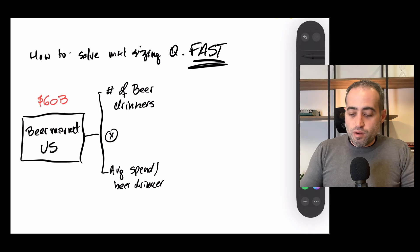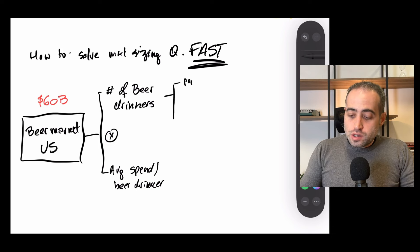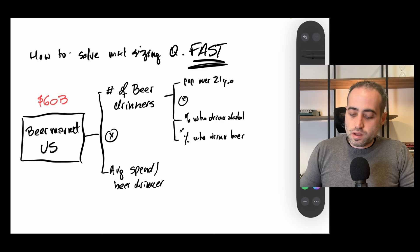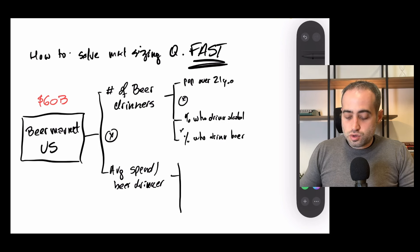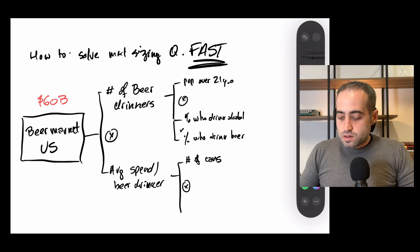And let's say that we go one layer deeper here. So number of beer drinkers, that would be the population over 21 years old times the percentage who drink alcohol times the percentage of those who drink beer. And then I'll split this one also into average spend per beer drinker is number of cans or equivalents per year times the average price.